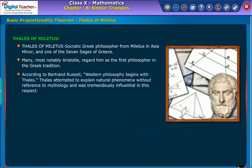According to Bertrand Russell, Western philosophy begins with Thales. Thales attempted to explain natural phenomena without reference to mythology and was tremendously influential in this respect.